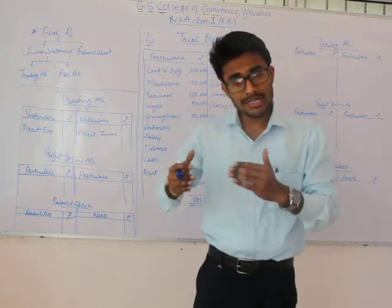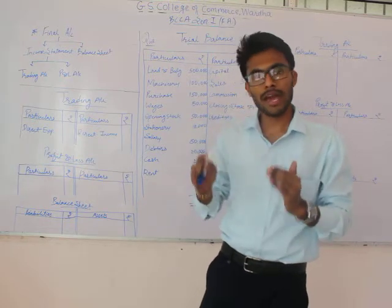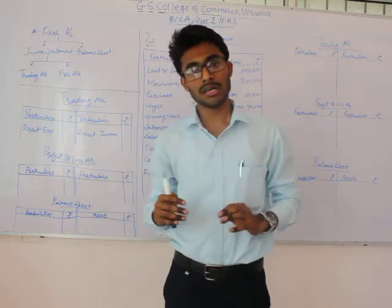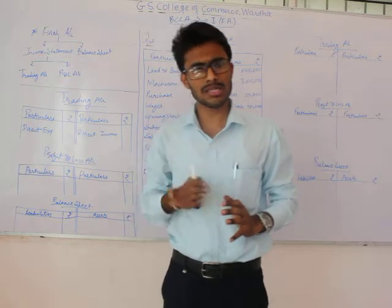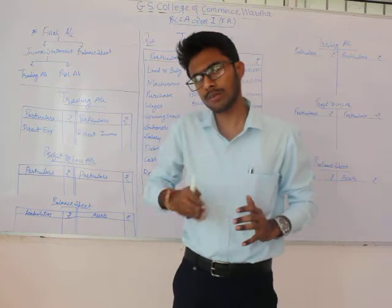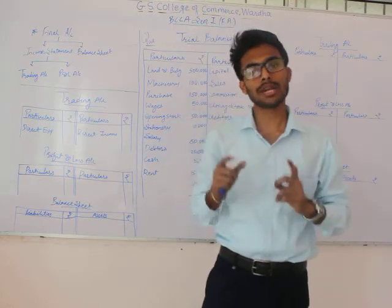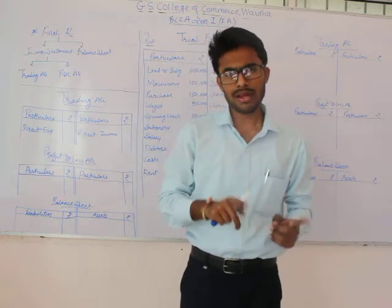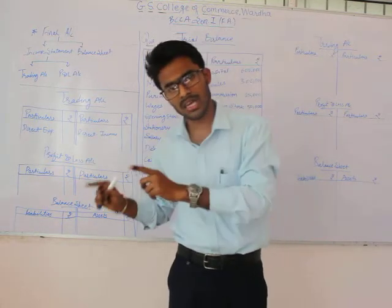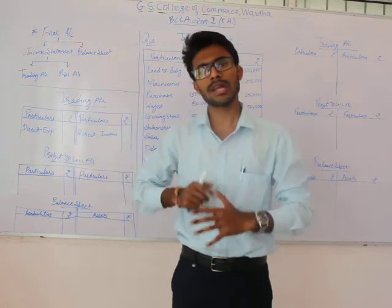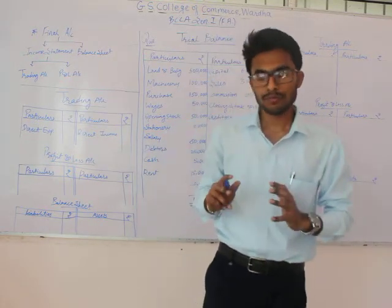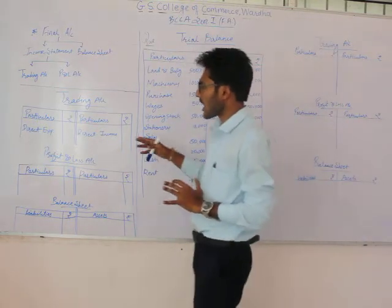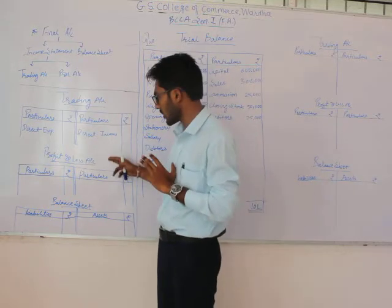After Trial Balance, we will be having three things: Trading, P&L, and Balancing. To proceed with these statements, we first analyze the Trial Balance, then post those items into the Trading Account, Manufacturing Account, P&L Account, and Balance Sheet. Please provide your focus on the whiteboard. Let us understand Trading, P&L, and Balancing one by one.